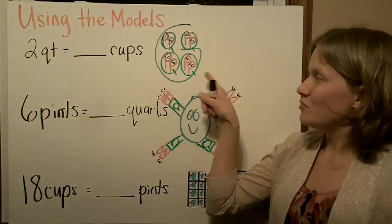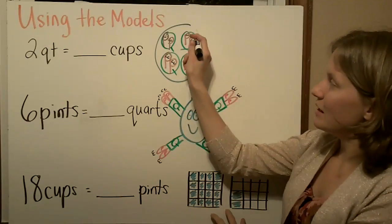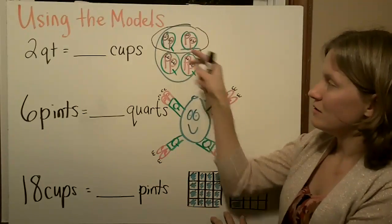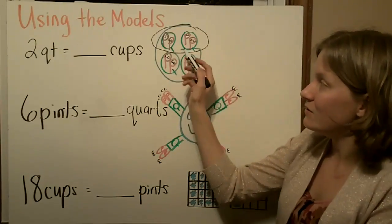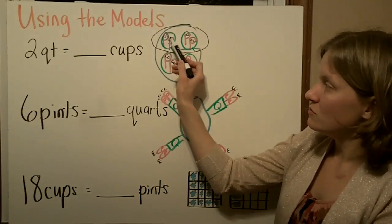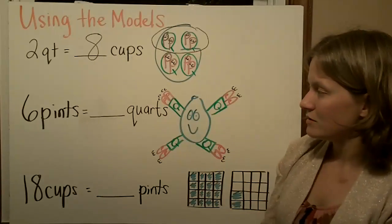If you're using the big G, you want to zero in on just two quarts. I like to circle them. Then count the cups inside those two quarts. There's two, four, six, eight cups inside two quarts.